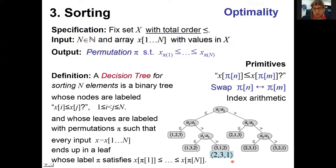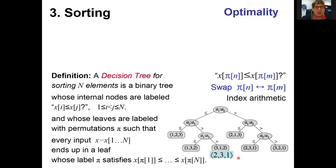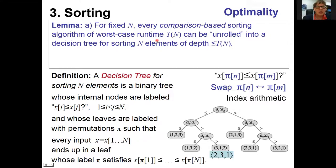Here's the key lemma. Part A: as long as N is fixed, any comparison-based sorting algorithm with running time T(N) can be converted into a decision tree for sorting N elements of depth T(N). This is proven by symbolic execution of the comparison-based sorting algorithm — for different N the same algorithm gives rise to different decision trees, each of depth at most the running time.